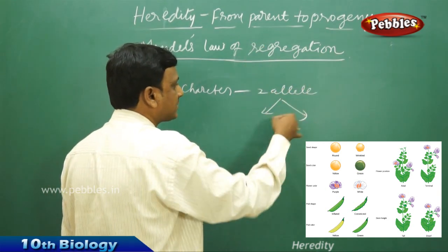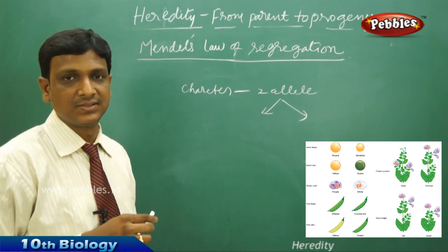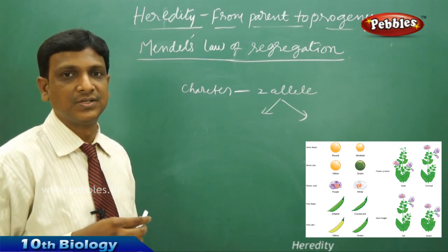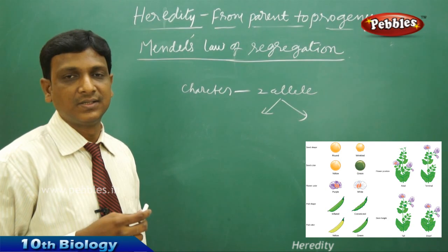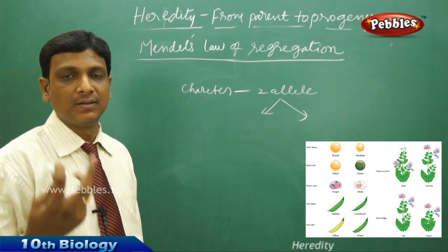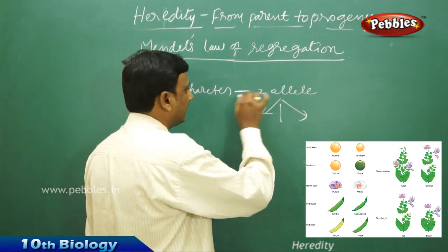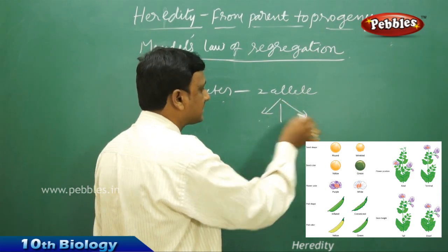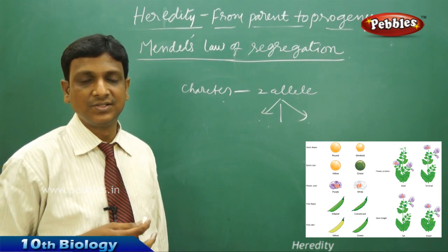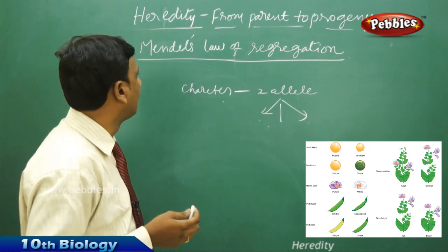These two alleles are separated during the process of formation of reproductive cells, like gametes. The sex is determined by chromosomes — by a pair of chromosomes. One factor is obtained from the male and the other from the female. A character is represented by two alleles, and these two alleles are segregated during the formation of reproductive cells. We do not know how they will be separated and how they will recombine again. This is called the Law of Segregation.